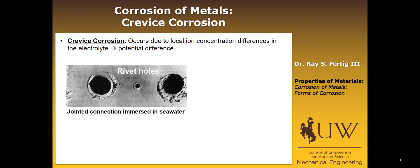Another form is what's called crevice corrosion. This is believed to occur due to local ion concentration differences in the electrolyte. That can happen — as shown in this picture of a jointed connection with washers immersed in seawater — where right underneath the washers there was a different chlorine and sodium concentration than in the bulk.